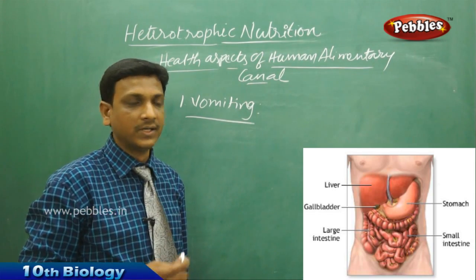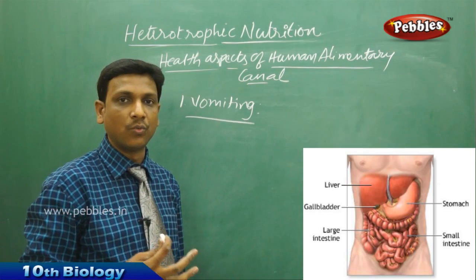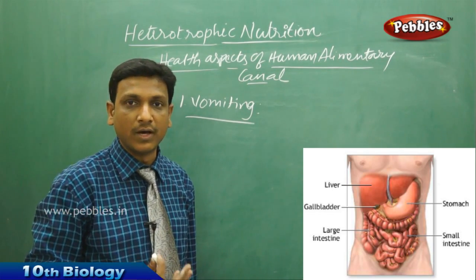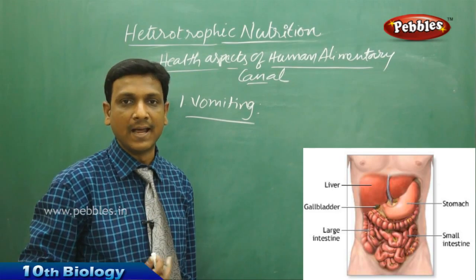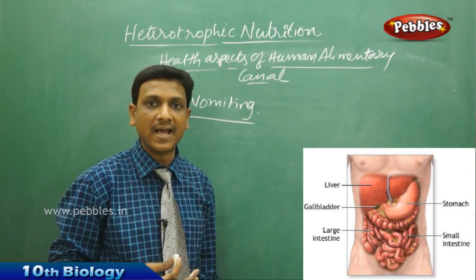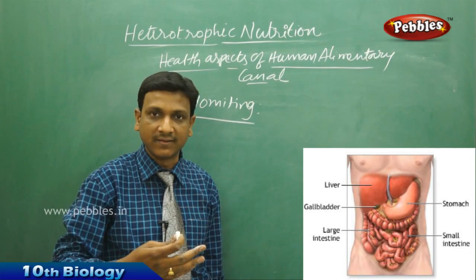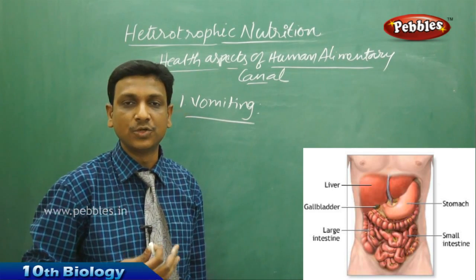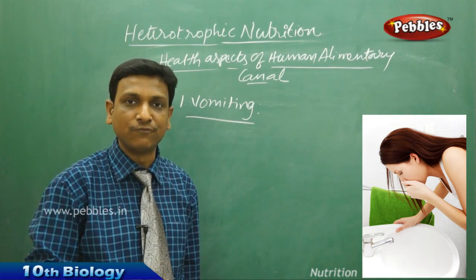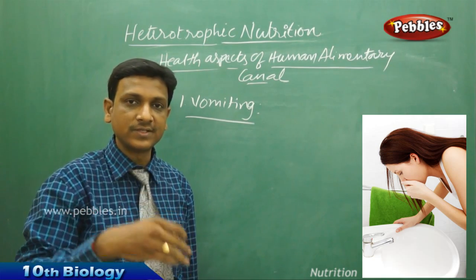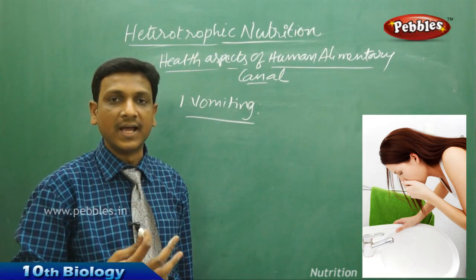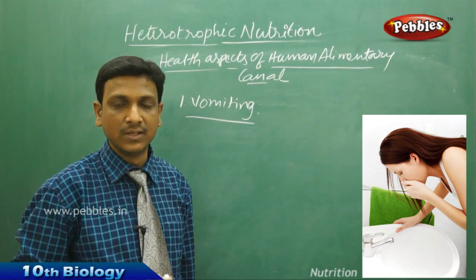Vomiting is observed in cases where the stomach wants to send out unwanted, poisonous, or excess food. This happens through reversed peristaltic movements in the esophagus and stomach. Normally, peristaltic movements help food pass from the esophagus to the stomach, but in vomiting that movement is reversed, sending food out of the body.